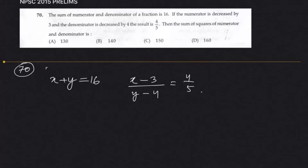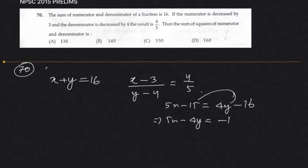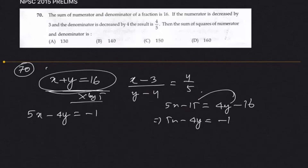Setting up the equation: 5x minus 15 equals 4y minus 16, which gives us 5x minus 4y equals minus 1. We now have two conditions. Multiplying the first equation by 5 using the elimination method gives us 5x plus 5y equals 80.